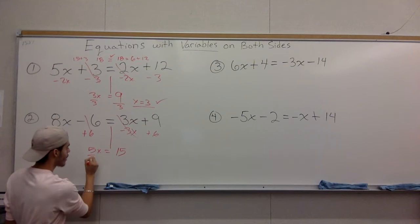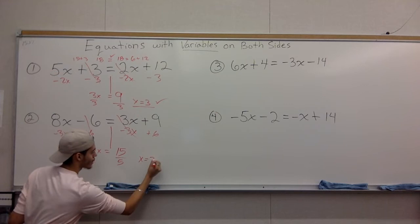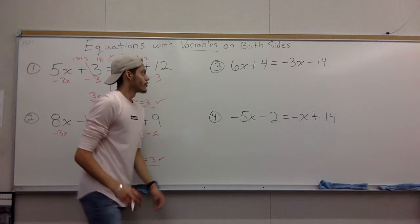We have the multiplication problem, 5x equals 15. Do the opposite, which is division, divide 5 on both sides, divide 5. 15 divided by 5, we get the final answer, x equals 3. Simple as that.